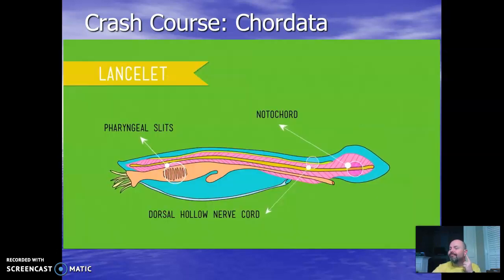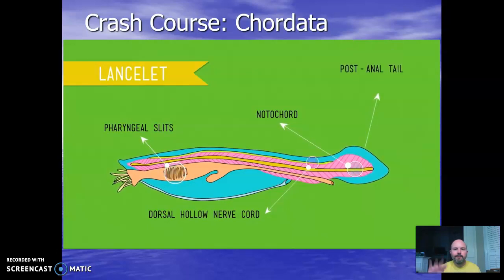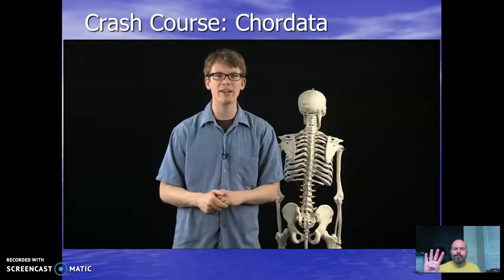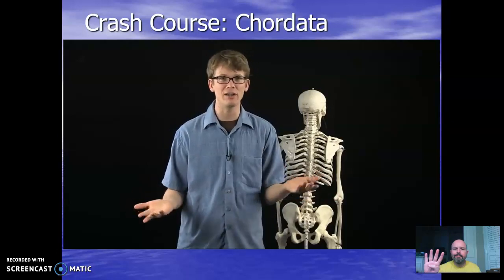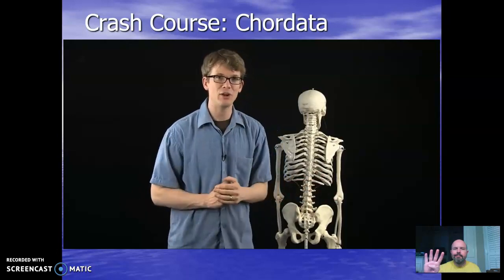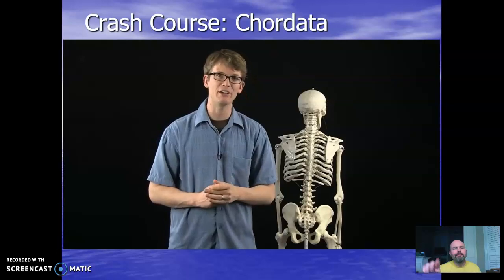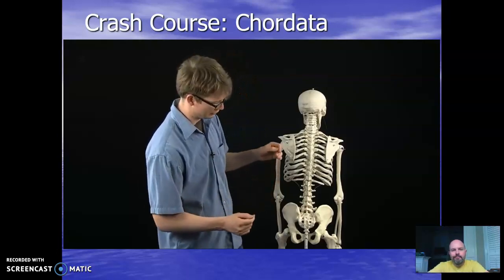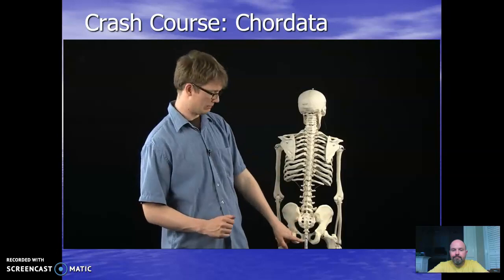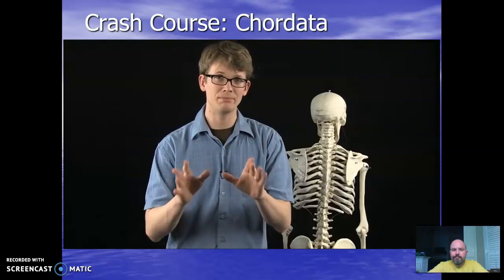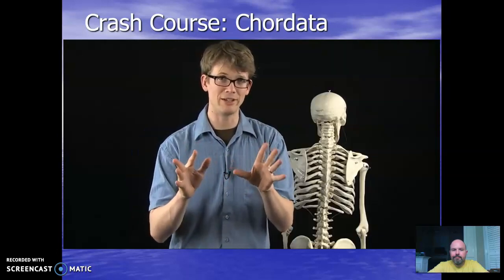Finally, we can't forget the fourth synapomorphy: the post-anal tail, which is exactly what it sounds like. It helps propel aquatic animals through the water, and in humans it shrinks during embryonic development into what is known as the coccyx, or tailbone. These four traits all began to appear during the Cambrian explosion more than 500 million years ago.